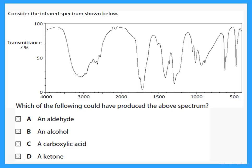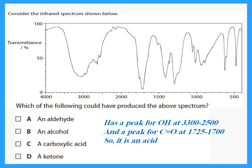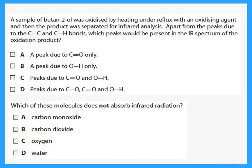Another spectrum — which of the following could have produced this? There is clearly a broad OH peak at around 3000, so it could be an alcohol or an acid. There is also a peak for C=O at around 1700. Having both an OH and a C=O means it must be a carboxylic acid.